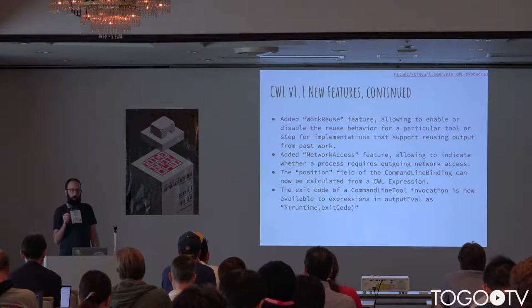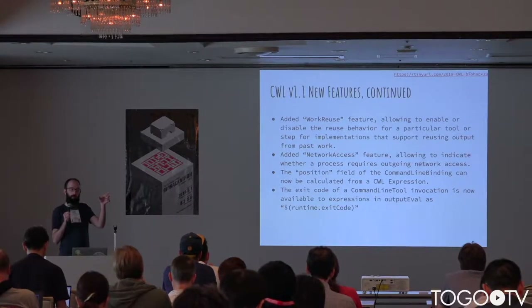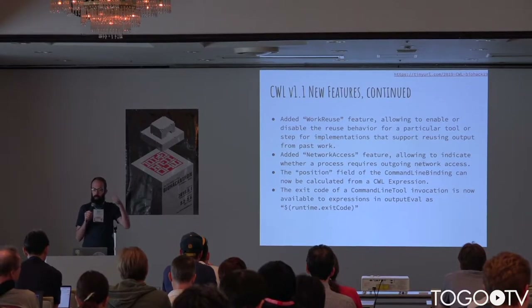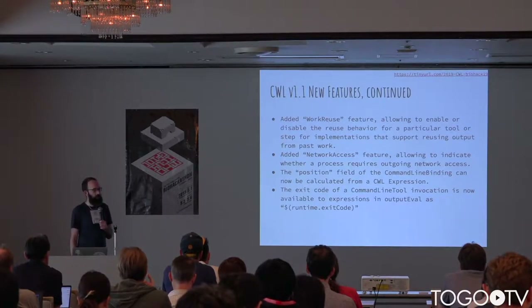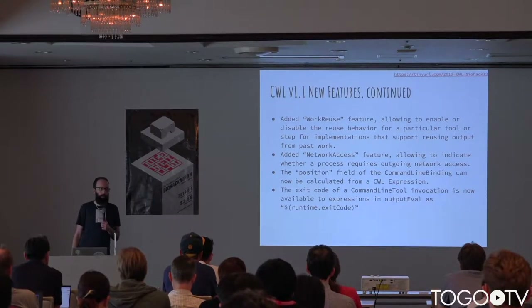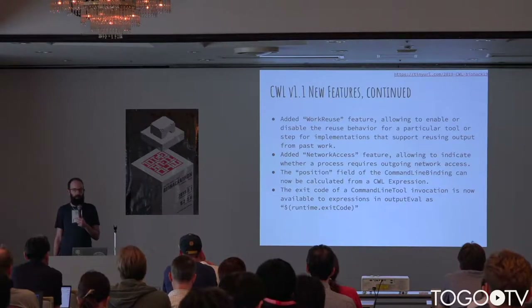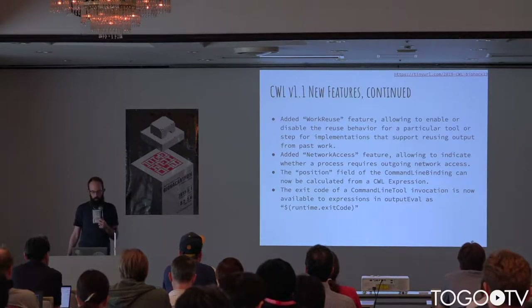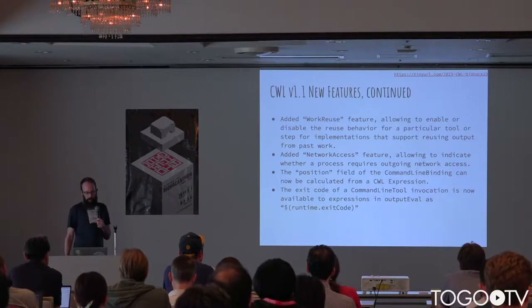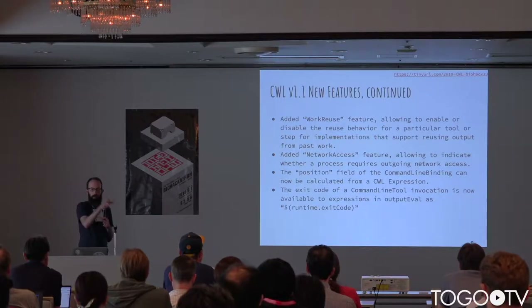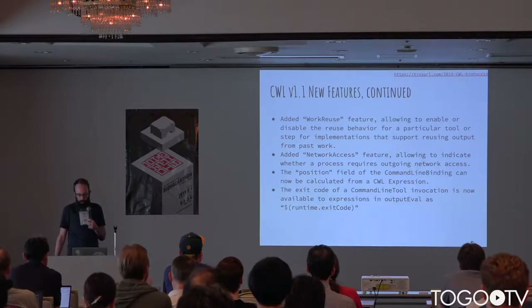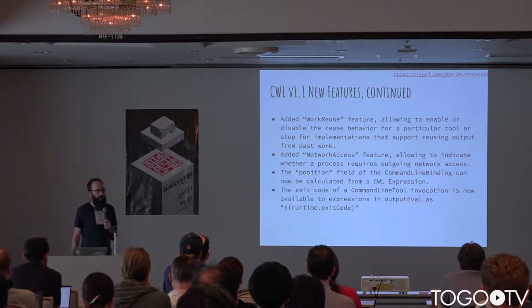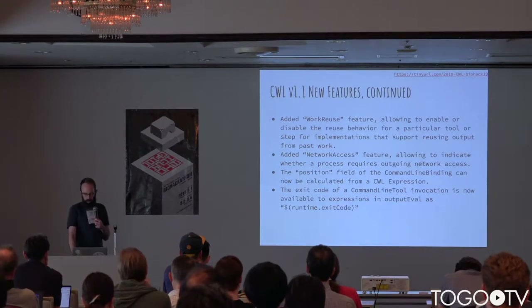A couple more new features: you can mark a step in your workflow as being okay to reuse, or that it should not be rerun. There's also a new network access feature and we're changing the default — if you don't tell us you need the network, you're not going to have network access. That surprised a lot of people in CWL version 1.0, so now we're giving you the option to be specific about it. When making the command line, we now allow the position for one of your arguments to be dynamic using a CWL expression. And you also now have access to the exit code in a couple of places where that wasn't available before.